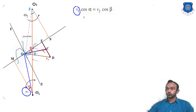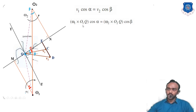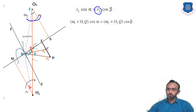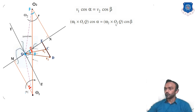So v1 is equal to omega 1 into O1Q cos alpha. Similarly, the velocity v2 is equal to the angular velocity of gear 2 (omega 2) into the distance O2Q, giving v2 = omega 2 into O2Q.